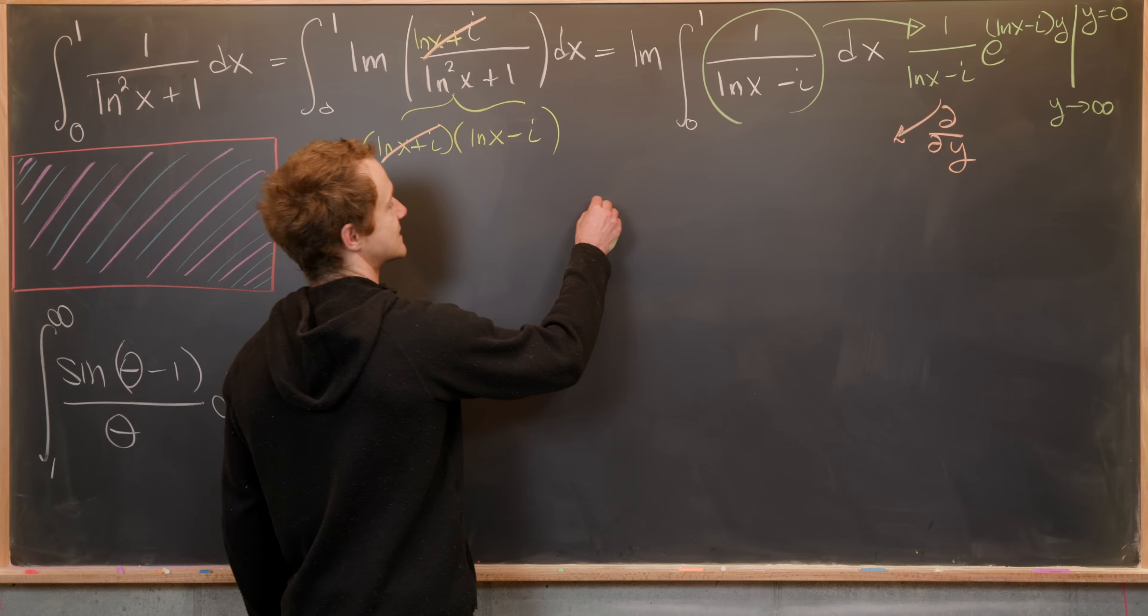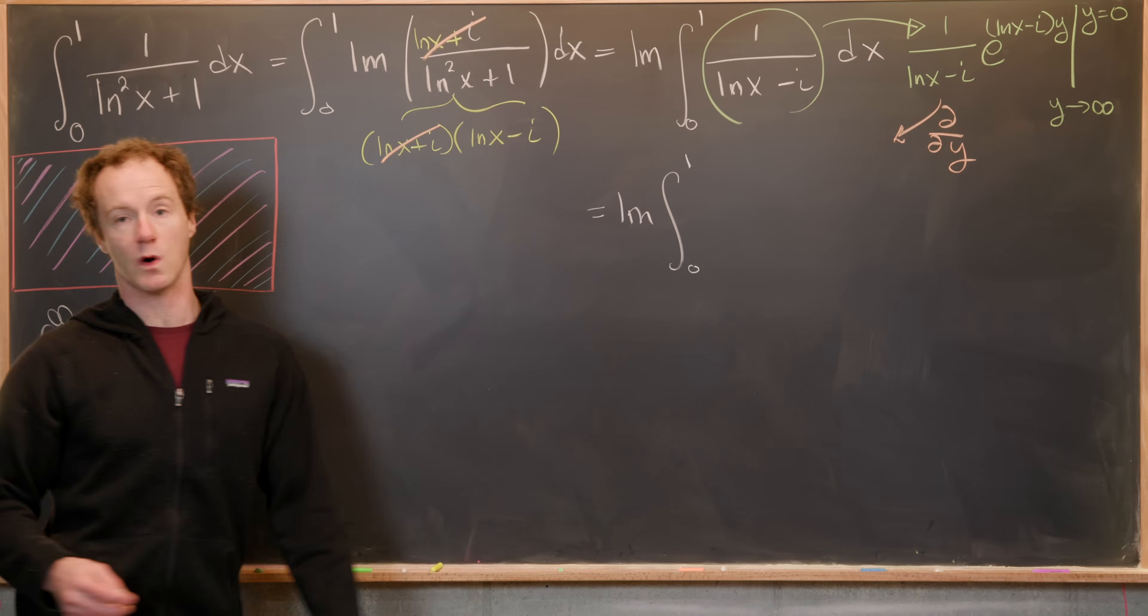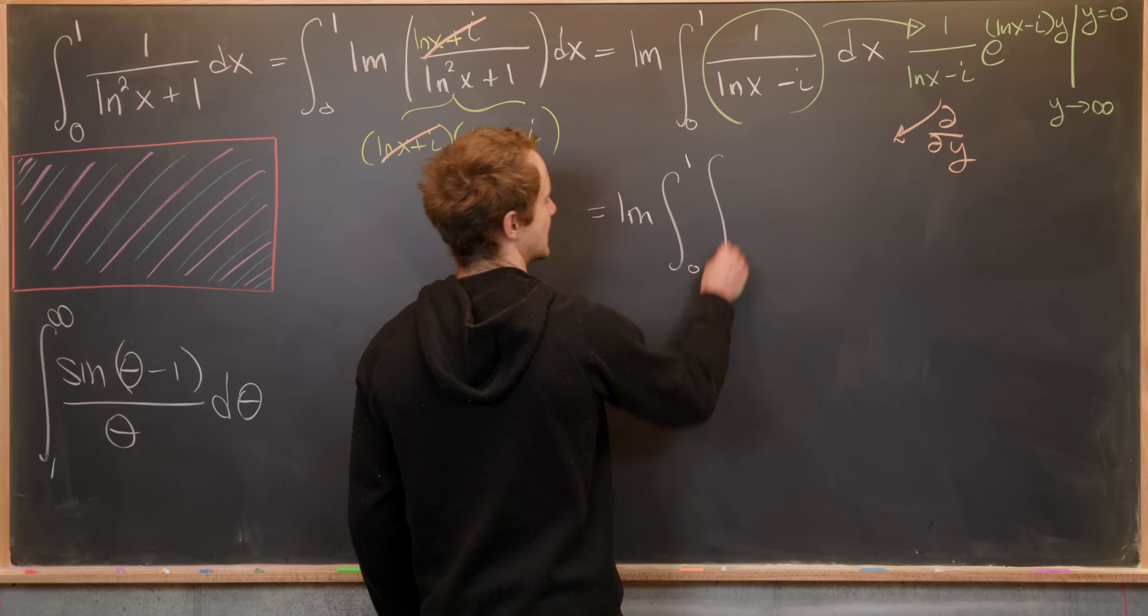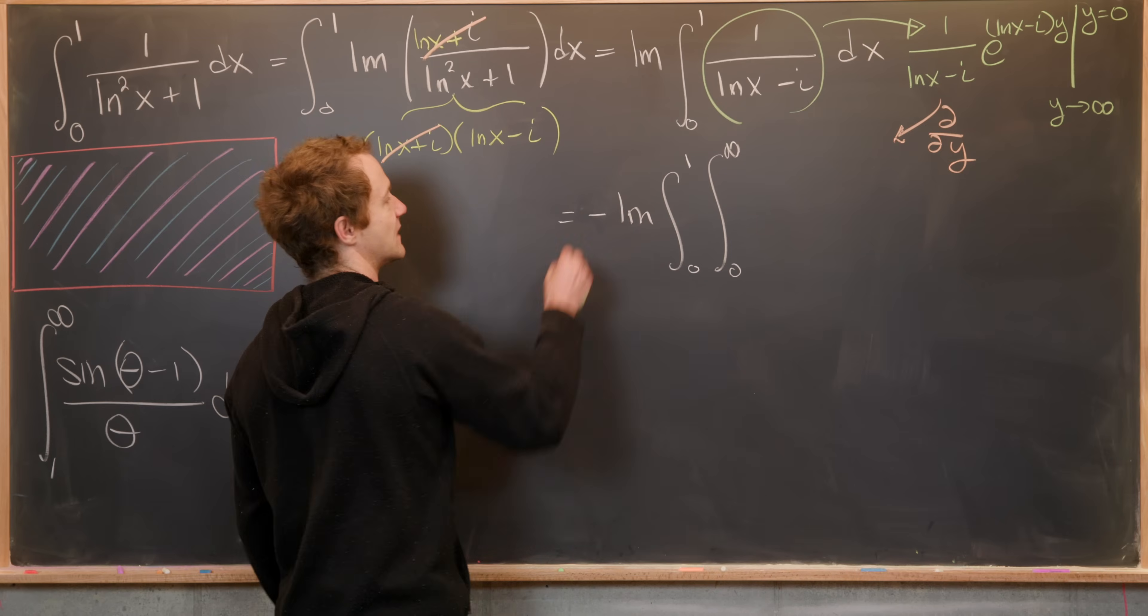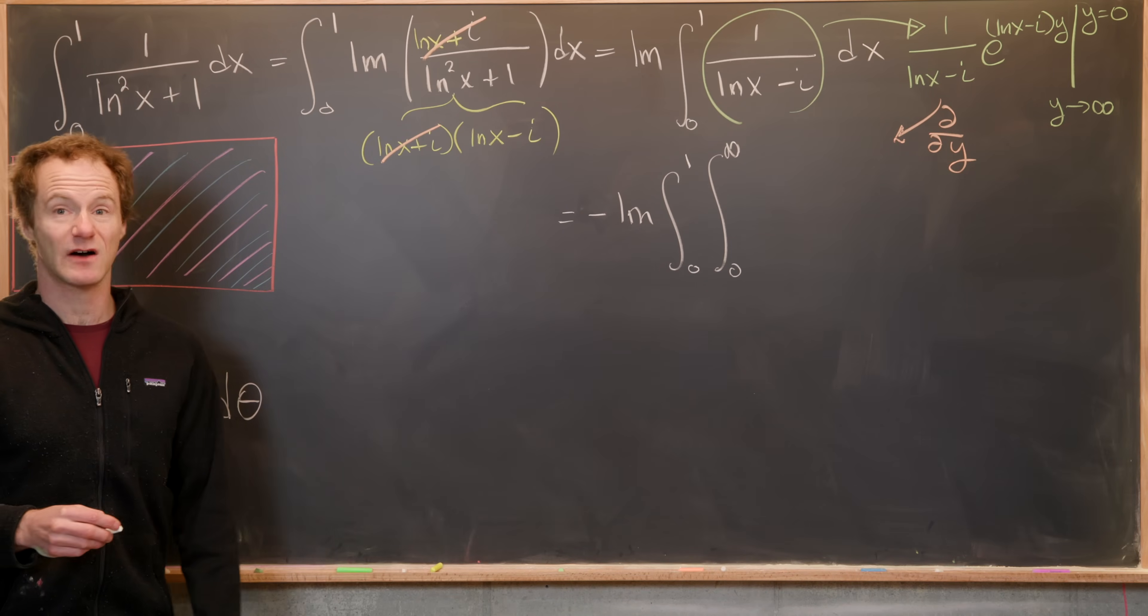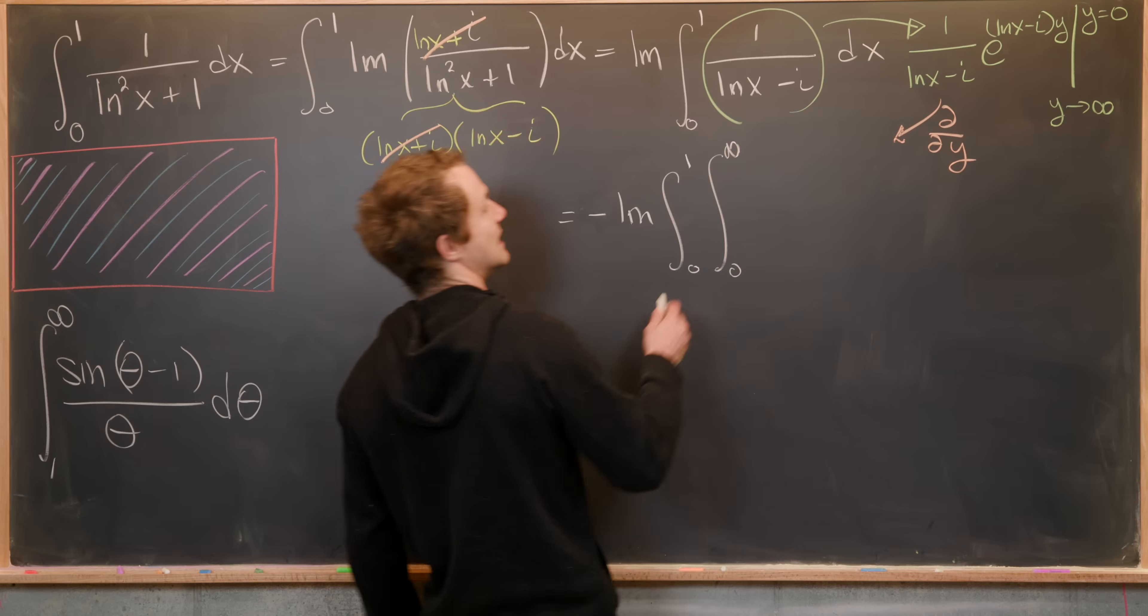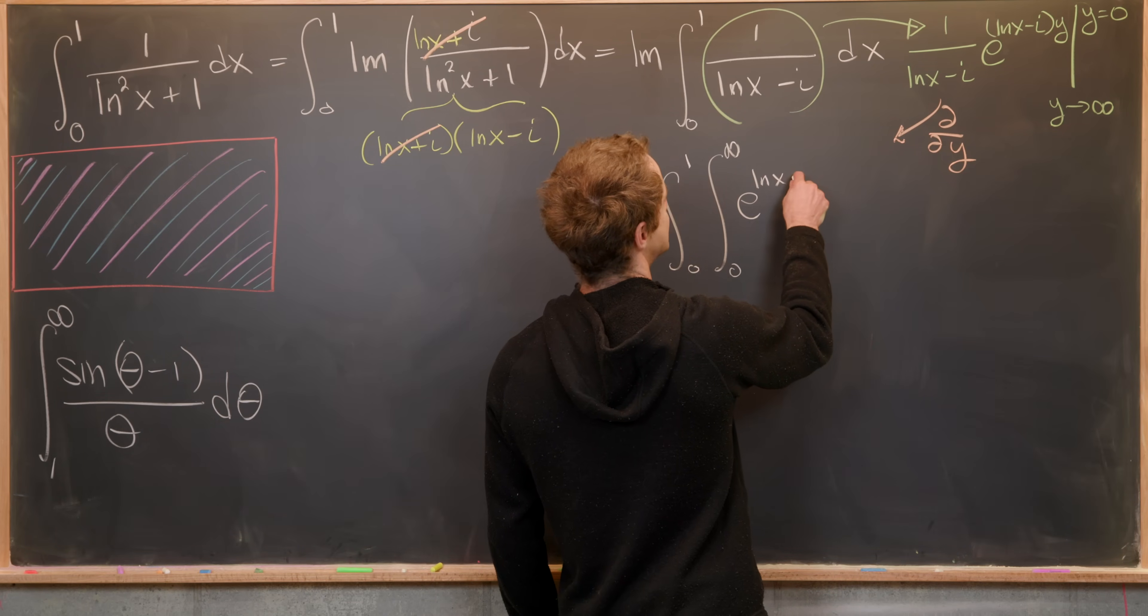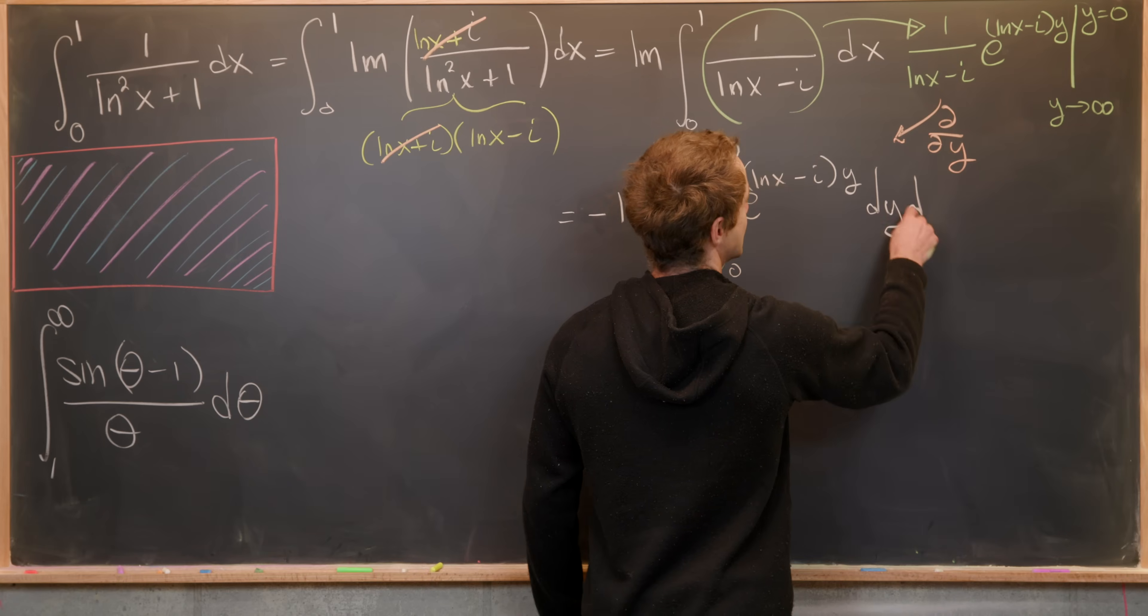And that's going to give us the imaginary part of the integral from zero to one, and then the integral from zero to infinity, where I'll switch the order of integration by putting a minus sign out front. So that's not too hard to see that that is possible. And then next, I have e^((ln(x) - i)y) dy dx.